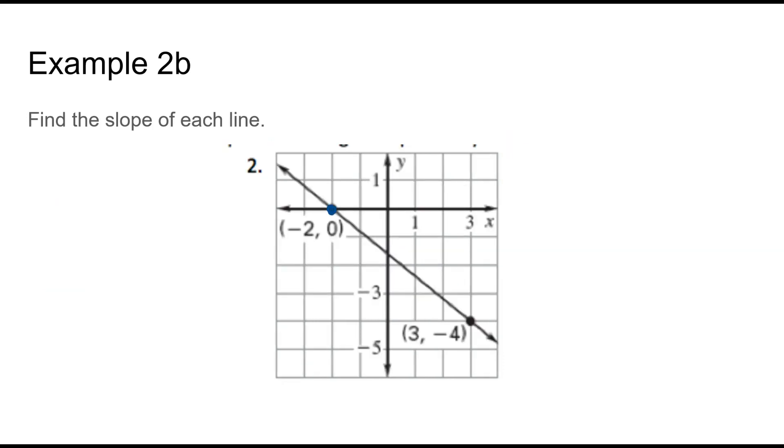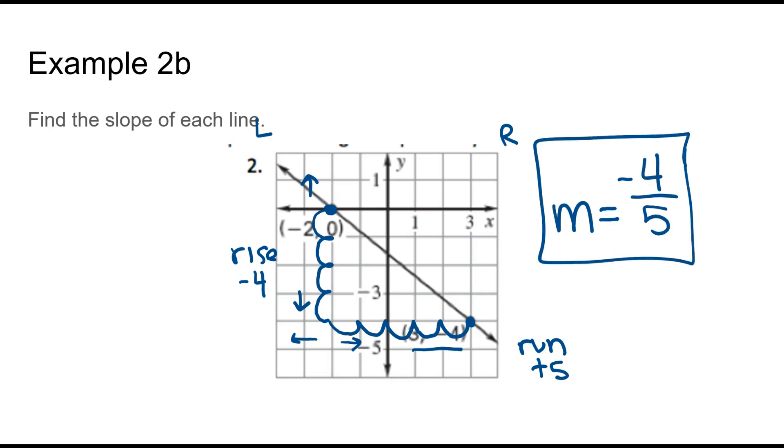Again to find the slope we need two points. I always pick the leftmost point. From this point we need to know do we go up or down. To get to this point we need to go down. We go down 1, 2, 3, 4. So our rise is negative 4. From this point do we need to go left or to the right? We'll go to the right. Positive 1, 2, 3, 4, 5. Our run is positive 5. So our slope is negative 4 over 5. Those numbers don't have any common factors so we are done.